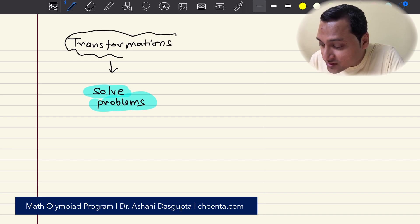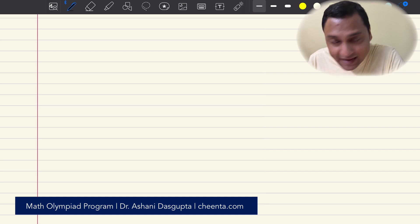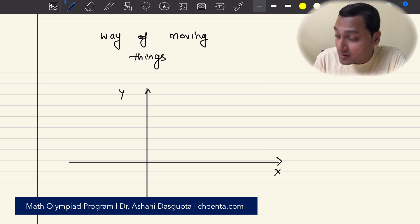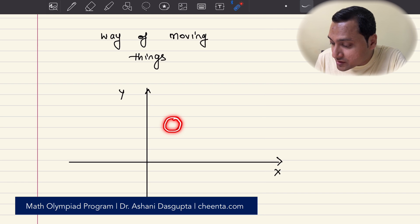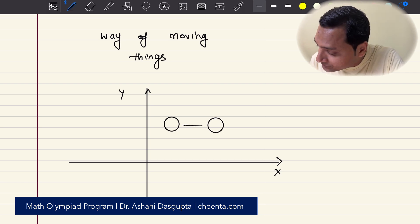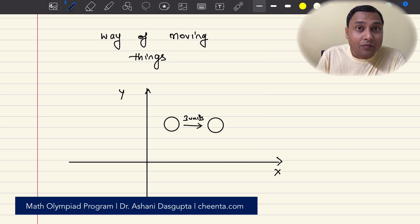So, what is a geometric transformation? In a very simple sense, it is a way of moving things. Let's say we have a two-dimensional plane, XY coordinate plane, and we have a little circle here. This particular circle, we can try to move it horizontally by three units. So it comes here. It moves horizontally by three units. And what we just performed is called a geometric transformation. This particular transformation is known as translation.